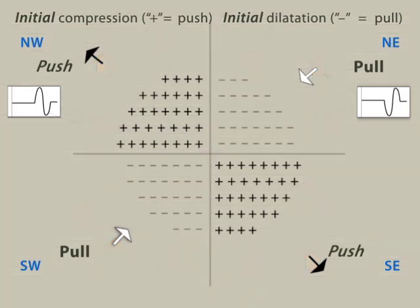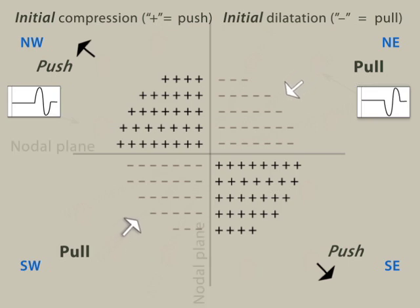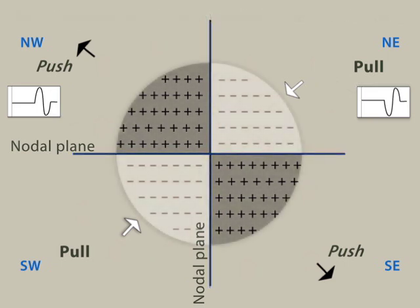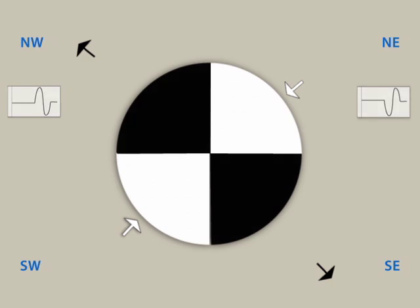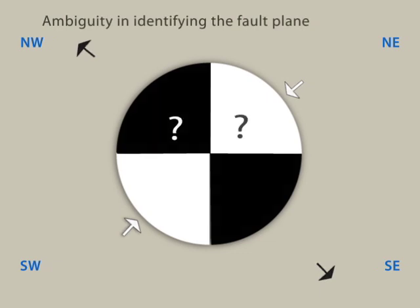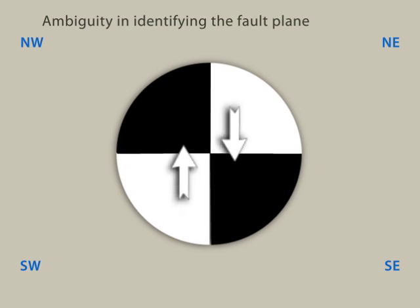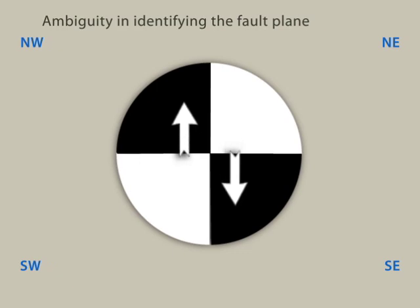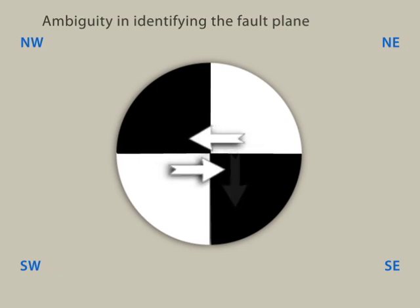With observations from many stations, we see two quadrants of compressional arrivals and two quadrants of dilatational arrivals, separated by perpendicular nodal planes. To simplify the illustration, compressional quadrants can be shaded and dilatational quadrants are left unshaded, producing a P wave first motion pattern that looks like a beach ball. Notice that this pattern can be produced either by right lateral strike-slip faulting on a north-south fault plane or left lateral strike-slip faulting on an east-west fault plane.